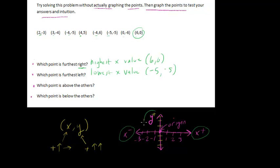Which point is above the others? Well, that would be the one with the highest y value. So here, that looks like this point right here, (-4, 6). And that was just, again, the highest y value will be the most up on the graph. So that's (-4, 6).